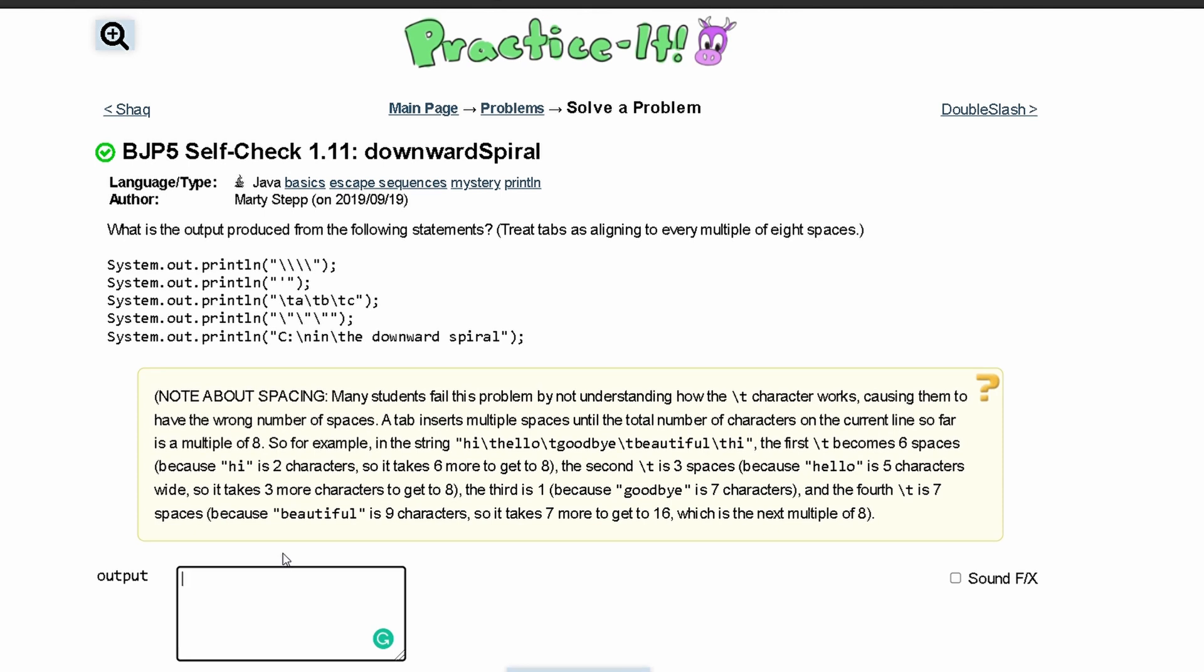For practice-it self-check 1.11 downward spiral, we're asked what is the output produced from the following statements. We're going to look at every single line of code. The first line is sysout println and we have four backslashes. Every two backslashes is one backslash, so this is just going to have two backslashes in the first line.